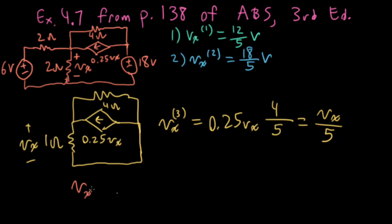So I'll say that VX is equal to VX superscript 1 which is 12 over 5 volts plus VX2 which is 18 over 5 volts plus VX3 which is VX over 5. And again notice that I've put off finding VX explicitly until I've got all the contributions included. Okay let's see. Let me multiply both sides of the equation by 5. So I'll write 5 VX is equal to 12 plus 18 is 30 plus VX.